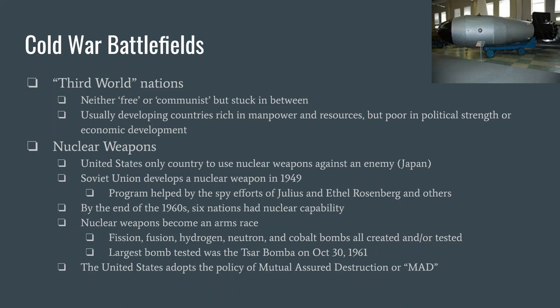By 1950, there are two nuclear capable countries. By the time we get to 1970, two has become six: Great Britain, France, the United States, the Soviet Union, China, and India are all nuclear countries. India was one of those third world countries worried about having to protect itself from both East and West.